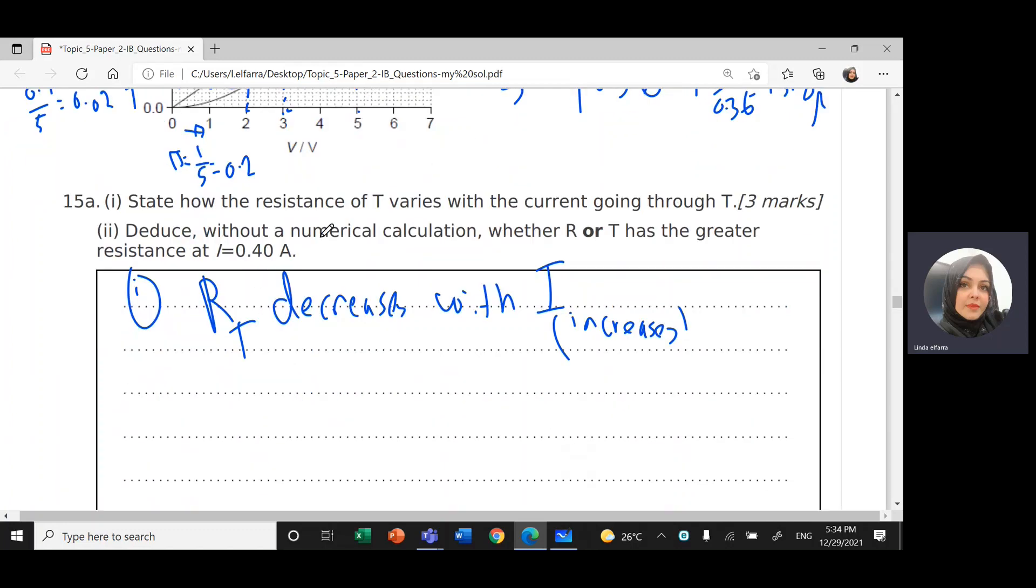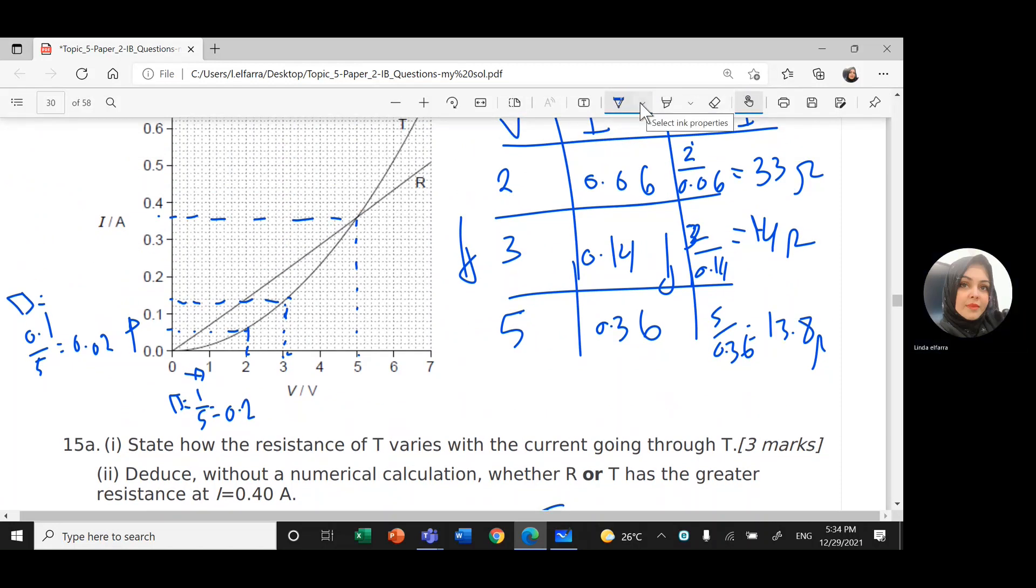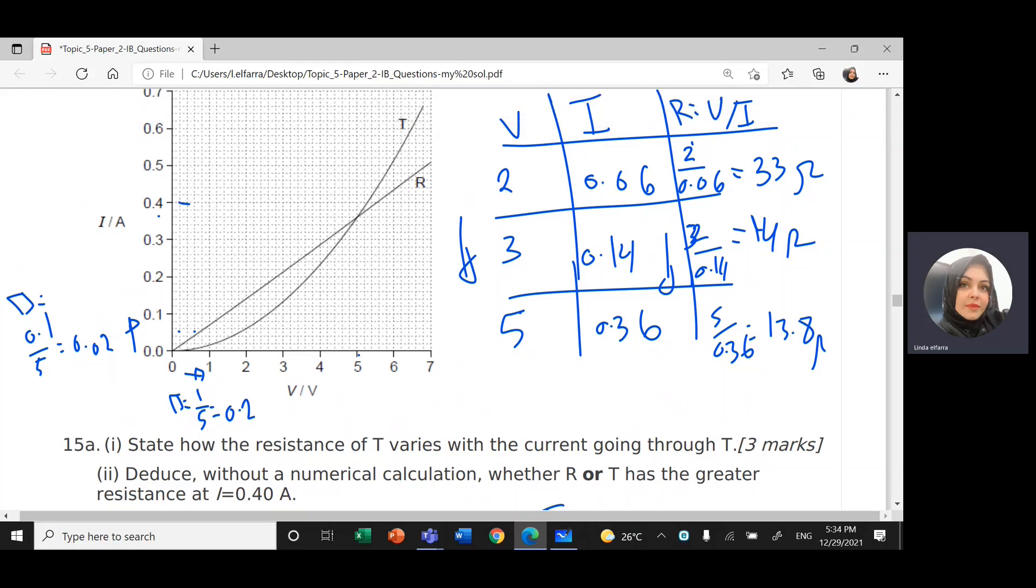Deduce without a numerical calculation, whether R or T has a greater resistance at the current 0.40 amp. At 0.40 amp, let's clean this one. So here, we'll go and make a line that hit the curve T and read the value of the voltage.